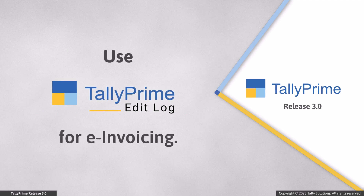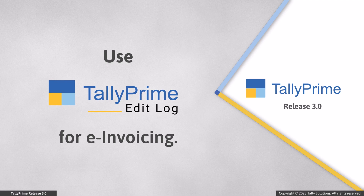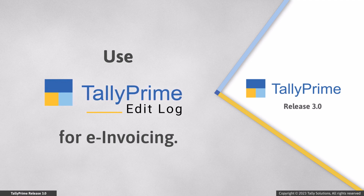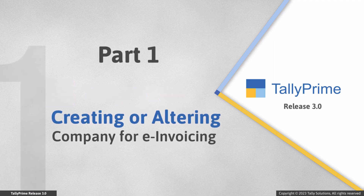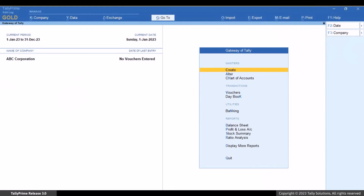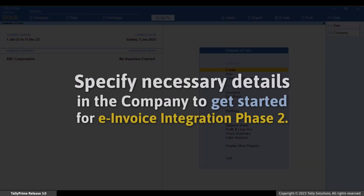For e-invoicing purposes, we recommend you use Tally Prime Edit Log, which will help you detect modifications made in vouchers for which e-invoices are generated. Let us see how to create or alter your company. You might have already created the company or you may be creating it now. Irrespective of that, you need to specify a few details to get started with e-invoice integration phase.